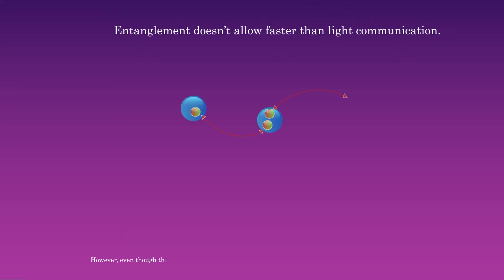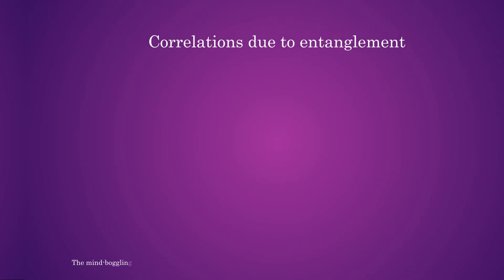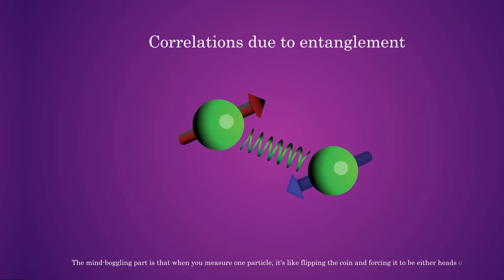However, even though the particle's properties are connected, you cannot use this connection to send information or messages faster than the speed of light. The mind-boggling part is that when you measure one particle, it's like flipping the coin and forcing it to be either heads or tails.